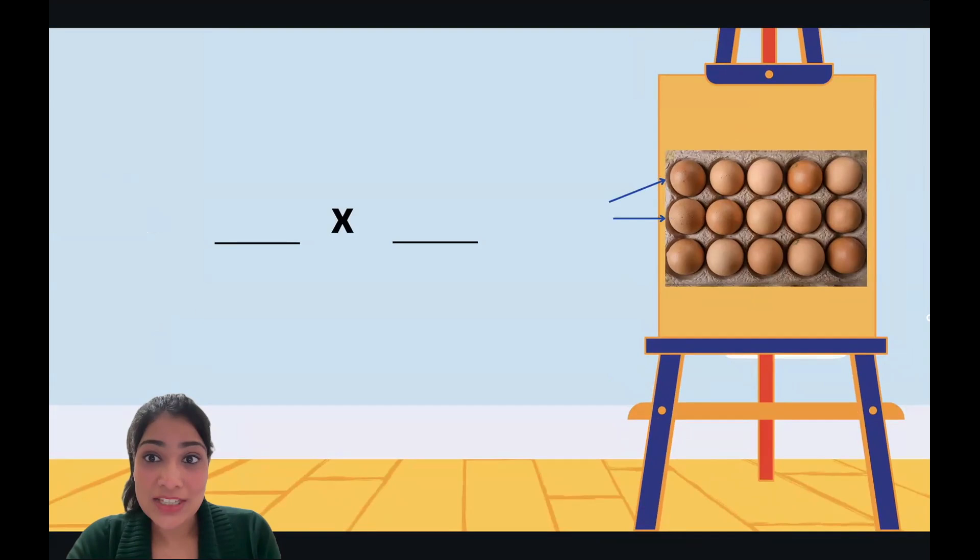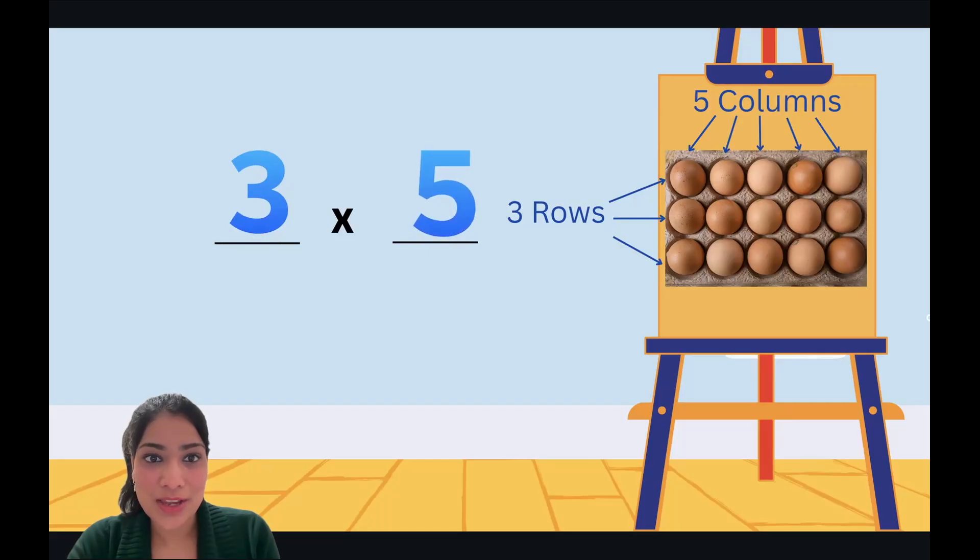Let's solve together. Okay, there are three rows here: one, two, three. Let's write it on our left. Let's count the number of columns: one, two, three, four, five. Five columns, which we write on our right. Three times five.